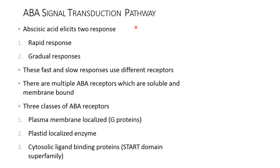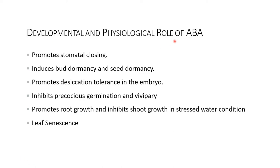Abscisic acid signal transduction pathway: abscisic acid elicits two responses — one is a rapid response and another is a gradual response. These fast and slow responses use different receptors. There are multiple abscisic acid receptors, which are soluble and membrane-bound. Three classes of ABA receptors are present: one is plasma membrane-localized G-protein, another is plastid-localized enzyme, and the third is a cytosolic ligand-binding protein with a START domain superfamily.